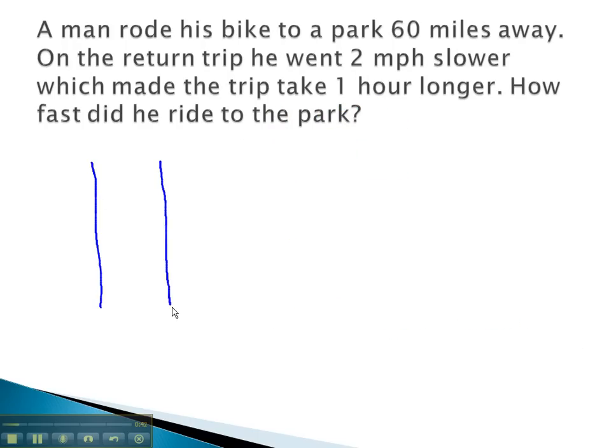In this problem, a man's riding his bike to the park 60 miles away. We know rate times time equals distance, but we don't know the rate he rode his bike, and we don't know the time it took him to get there. All we know is the distance was 60 miles away.